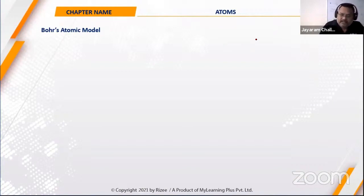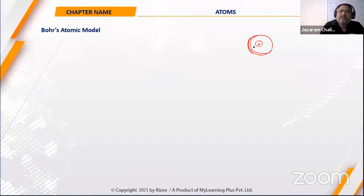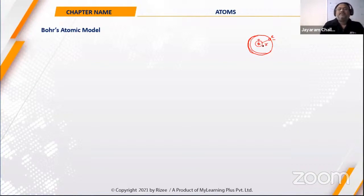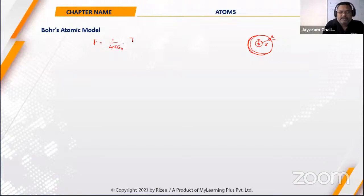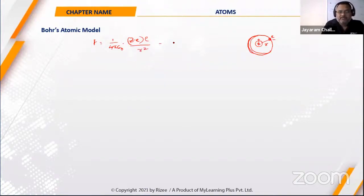Bohr assumed that the electrons revolving around the nucleus move in circular orbits in specific paths. The nucleus is positively charged and electrons are negatively charged. The radial distance from the nucleus is the radius R. Since the electrons are moving, the Coulombic force of attraction between the nucleus and electron is F = (1/4πε₀) · ZE²/R².